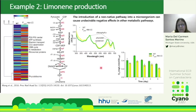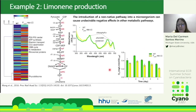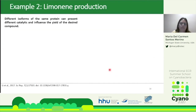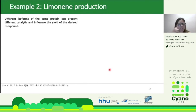When producing a specific compound, we can choose enzymes from different organisms, and testing the same protein from different sources can yield different catalytic activities, influencing the yield of the desired compound. In this experiment, limonene production was measured using two limonene synthases: one from Mentha spicata and one from Citrus limon. With Mentha spicata, limonene levels were higher at different time points for the same cell density.